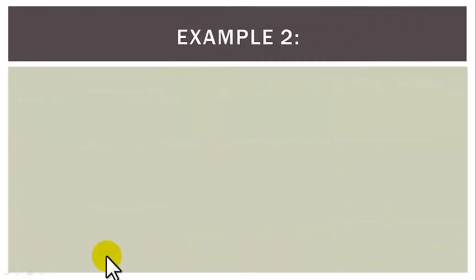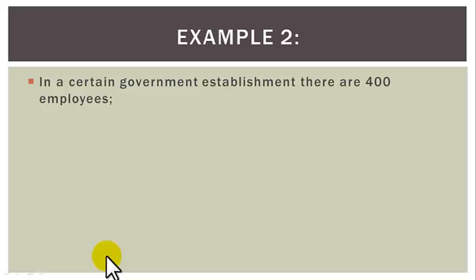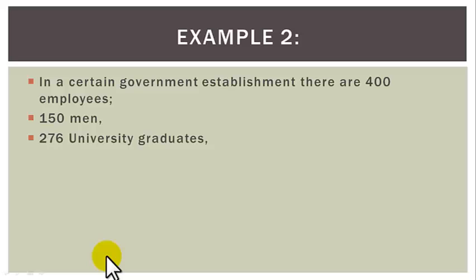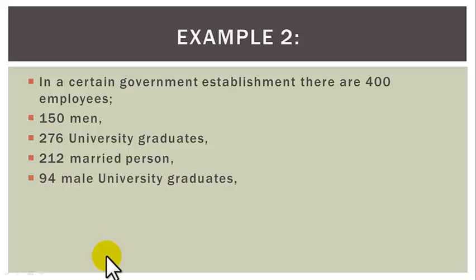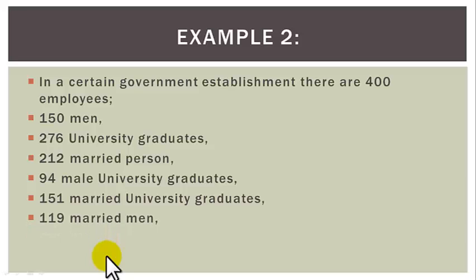Example 2: In a certain government establishment there are 400 employees. 150 are men, 276 are university graduates, 212 are married persons, 94 are male university graduates, 151 are married university graduates, 119 are married men, and 72 are married male university graduates.